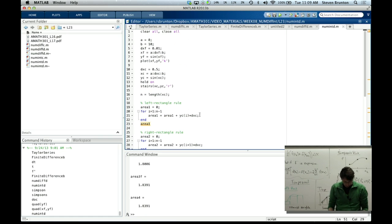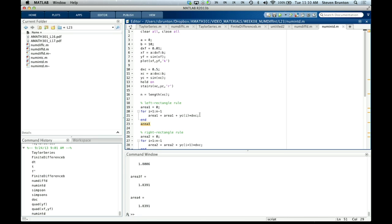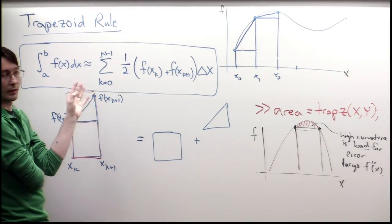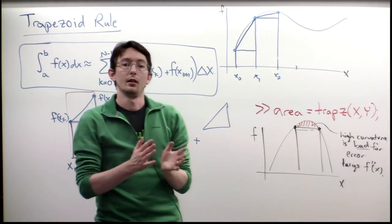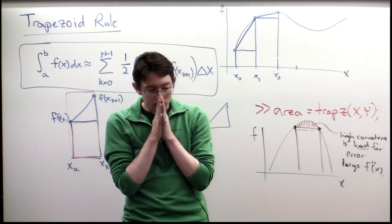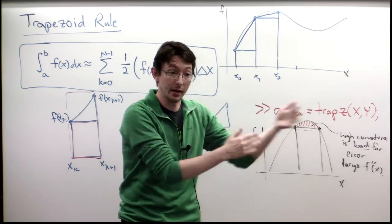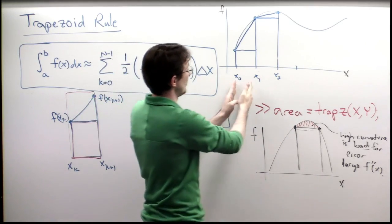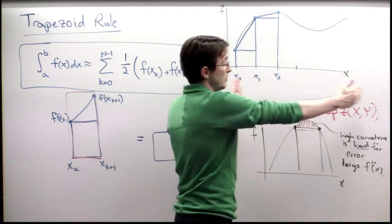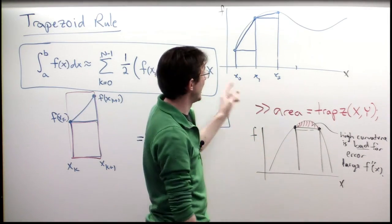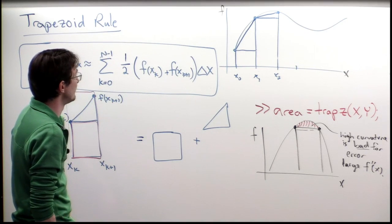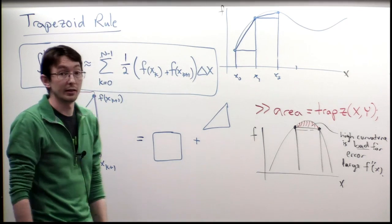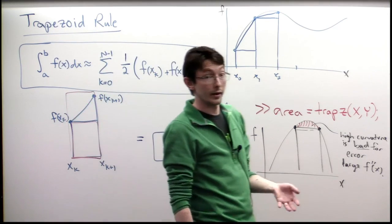Something worth noting: in the left and right rectangle rules, delta x doesn't need to be the same between rectangles. I could have data with non-uniform spacing — a small dx, then a big dx, then a small dx — and all of these formulas apply just the same. We've been using a fixed dx, but nothing requires that.